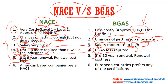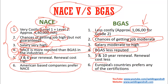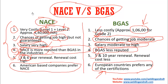One more important point: American-based companies and oil and gas companies always prefer a NACE certified professional. Whereas European countries may prefer either NACE or BGAS. So to conclude from these differences: the cost is very high for NACE, but the chances of getting a job and the salary are also very high. If you have 4,40,000 rupees, you should go for NACE instead of BGAS. But if you don't have that money, opt for BGAS.